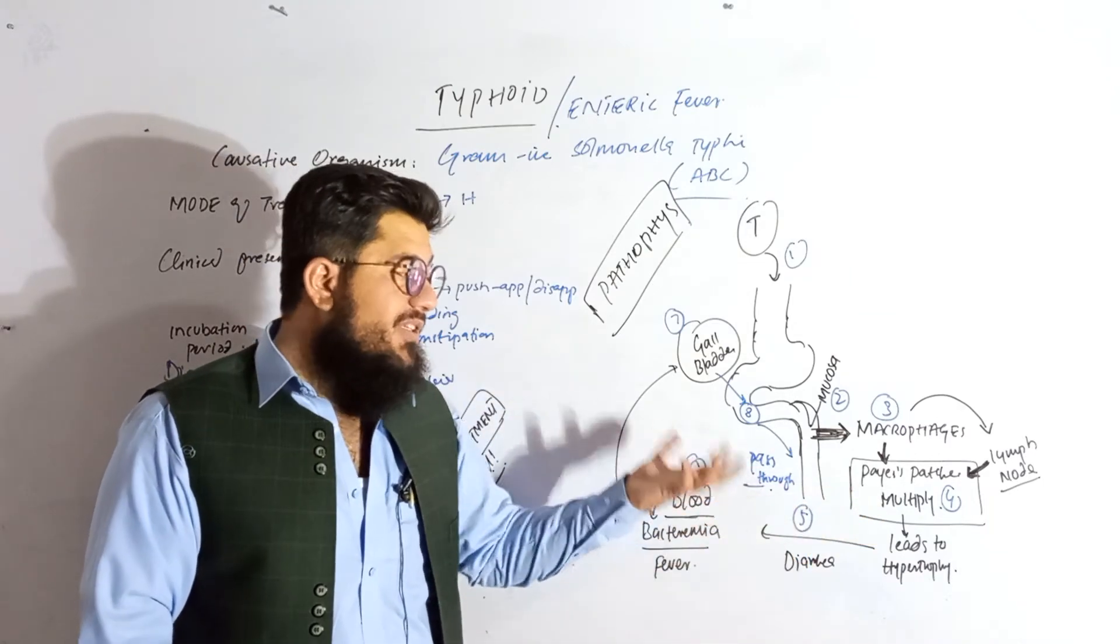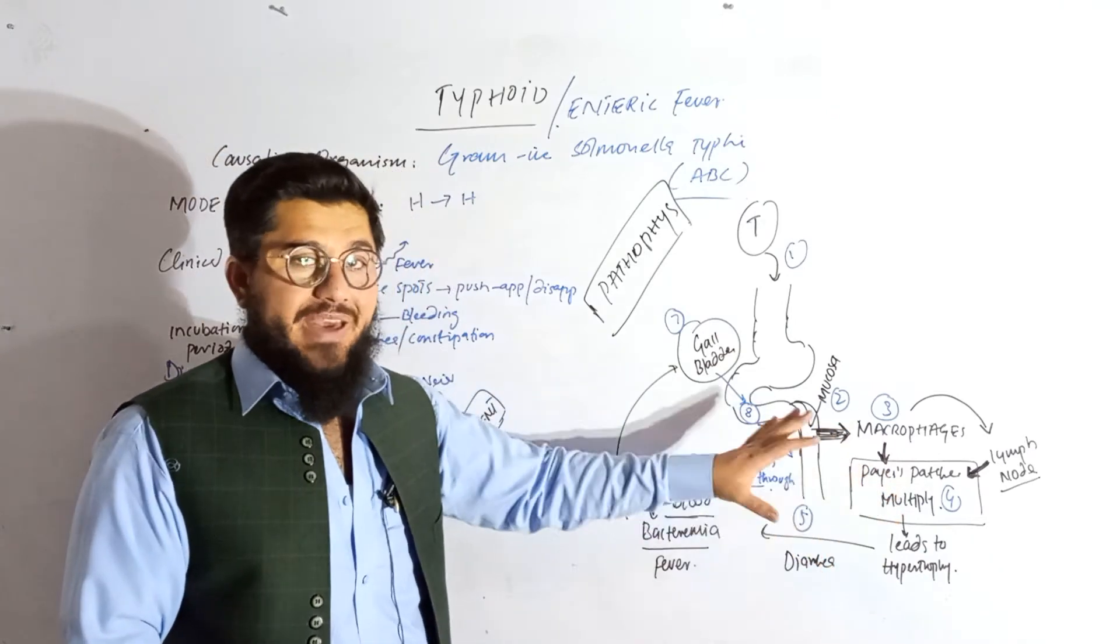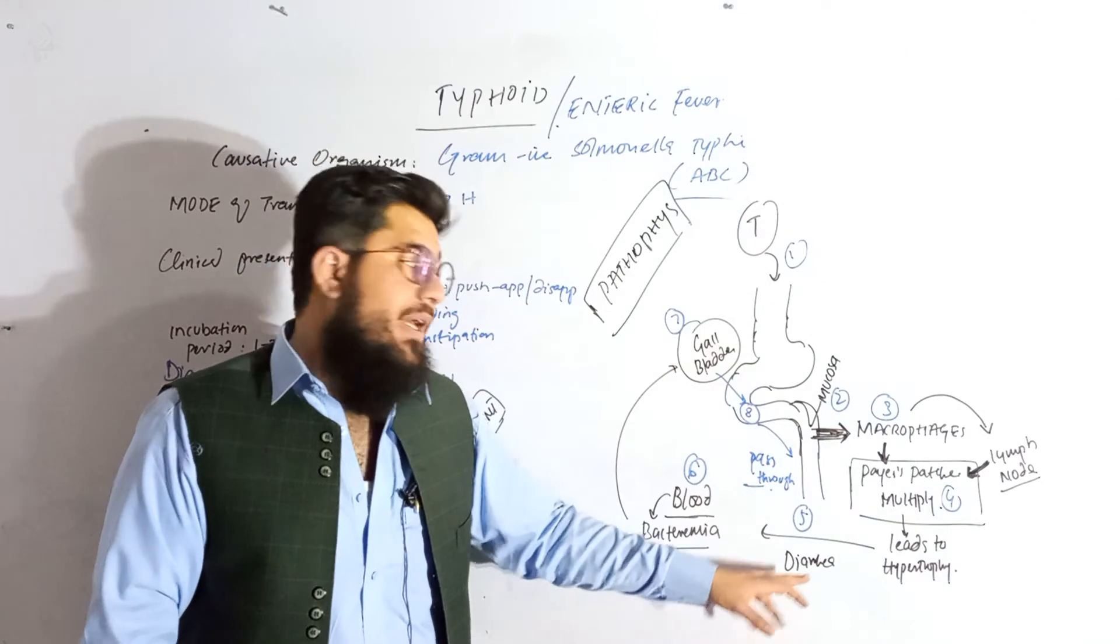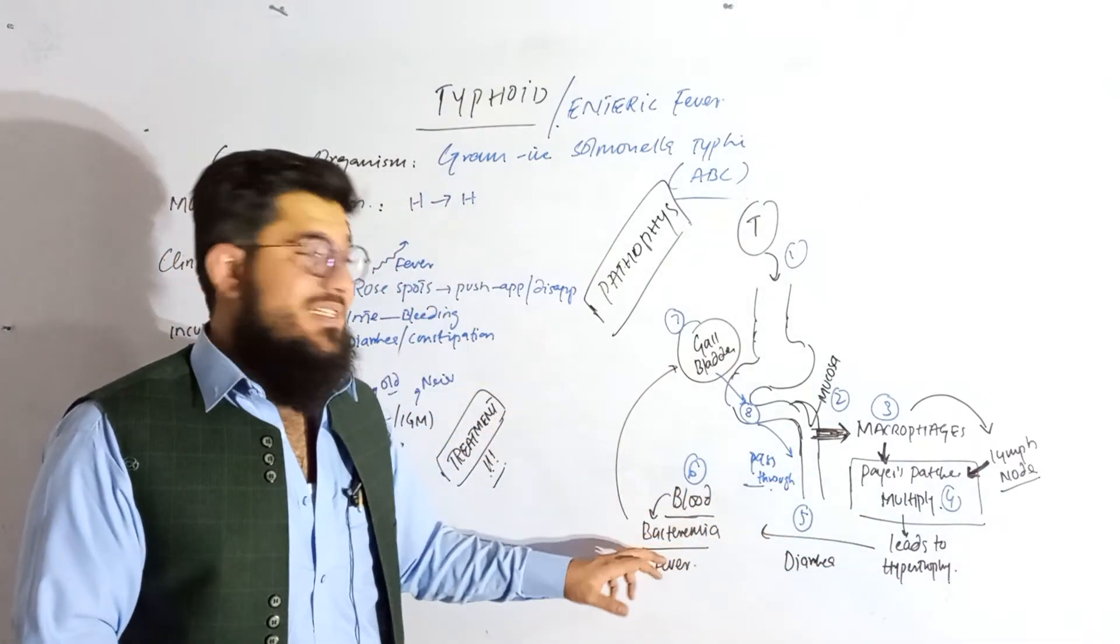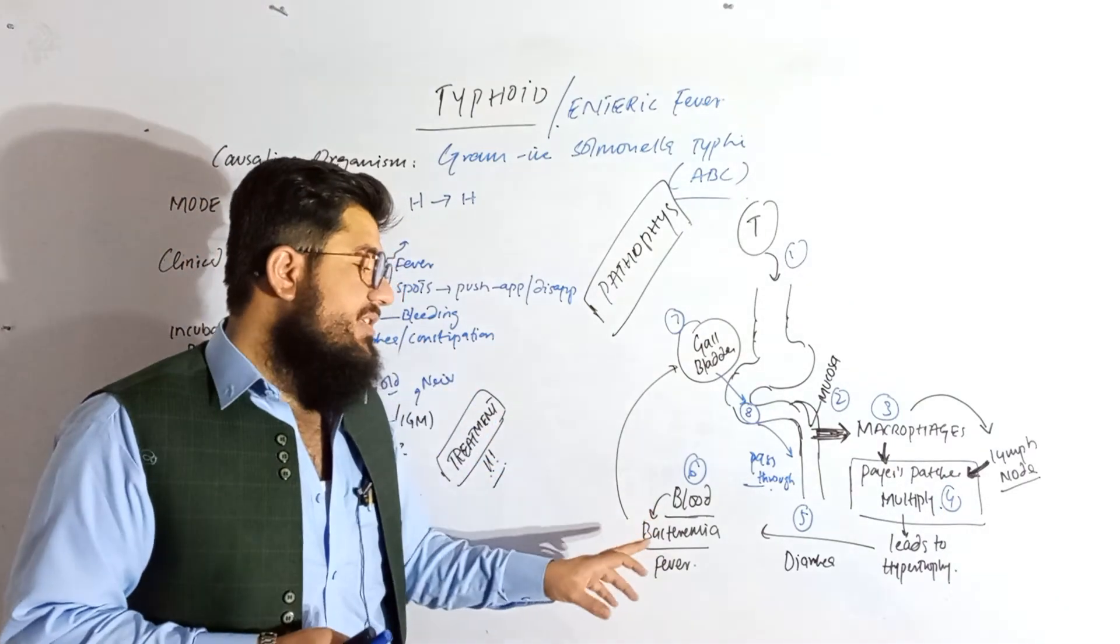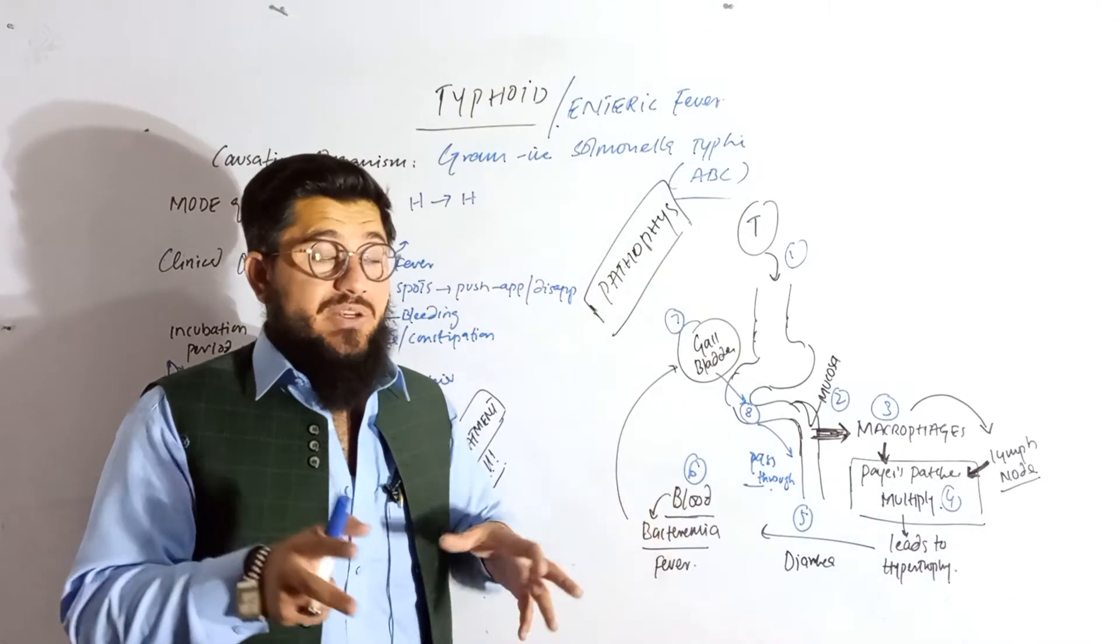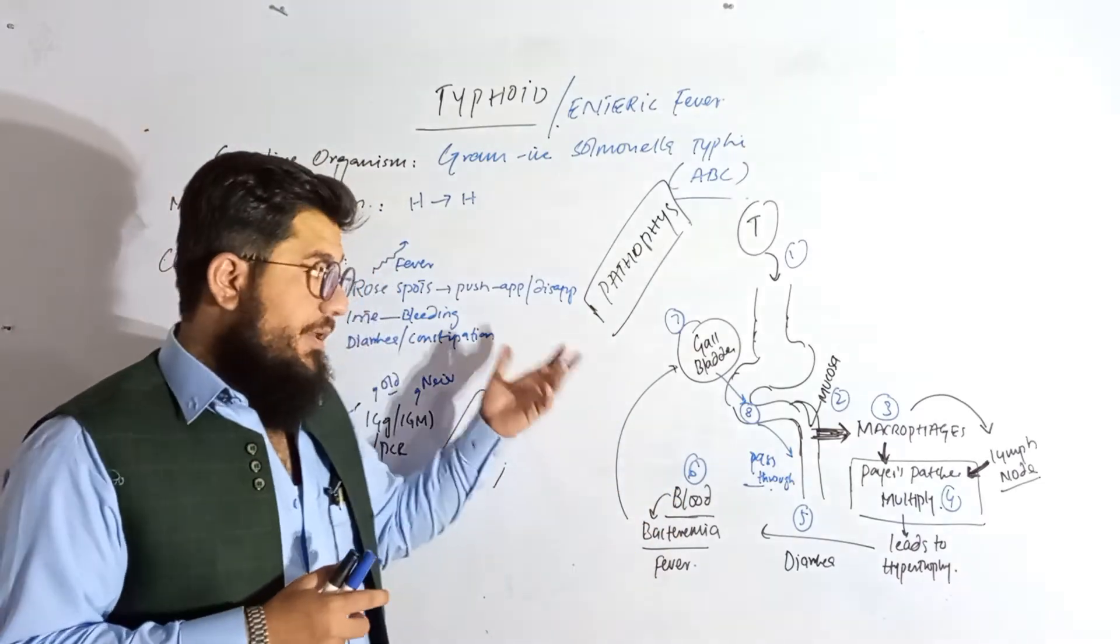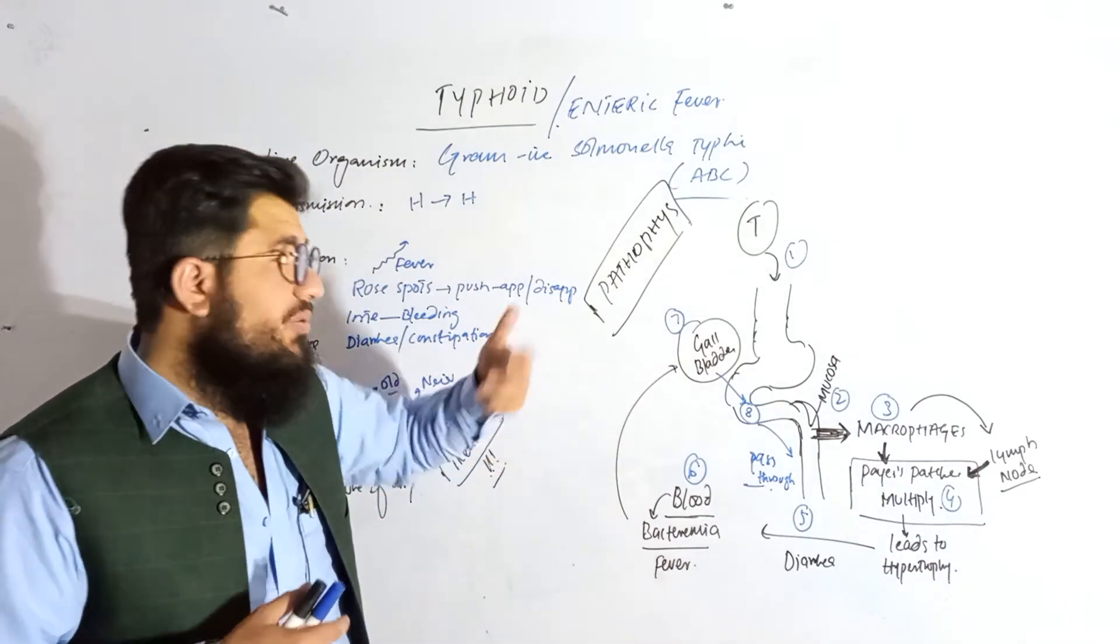Here, this will multiply. This bacteria will multiply and after the multiplication, this will lead to the hypertrophy of the Peyer's patches and here diarrhea may be seen. After that, it will start moving to the blood. As it enters the bacteremia phase, when the bacteria enters the blood, in this phase there are actually more further signs and symptoms seen. There will be the release of the cytokines. Those cytokines will then stimulate the temperature center, so then there will be a rise seen in the temperature. So fever may be seen in that way.